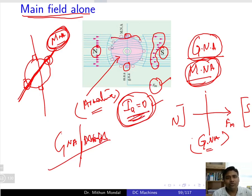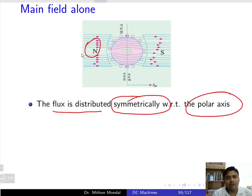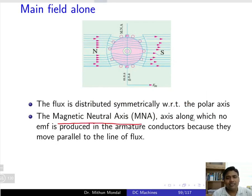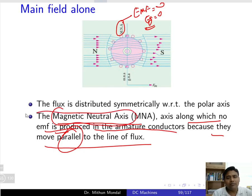With no armature current, only flux lines due to the main field cut the armature conductors, and the flux is distributed symmetrically with respect to the polar axis. The Magnetic Neutral Axis is the axis along which no EMF is produced — EMF will be zero — because the armature conductors move parallel to the lines of flux there. The MNA axis can be defined as the axis where EMF will not exist.